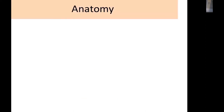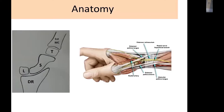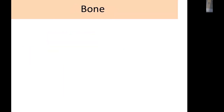Turning to the radial side of the wrist, pain can originate from bone — distal radius, lunate, scaphoid, trapezium, or first metacarpal — from the joint such as the trapeziometacarpal joint, or from soft tissue. The most common causes include scaphoid fracture, SNAC wrist, trapeziometacarpal osteoarthritis, and soft tissue causes such as de Quervain's tenosynovitis, intersection syndrome, or Wartenberg syndrome.